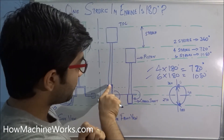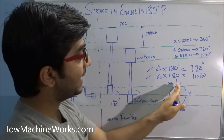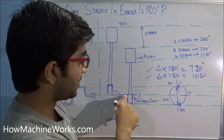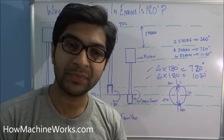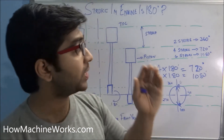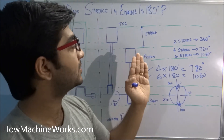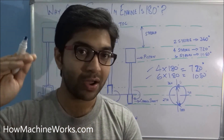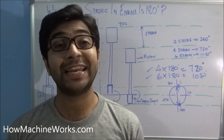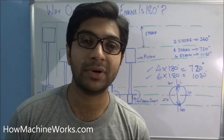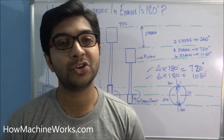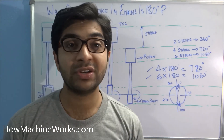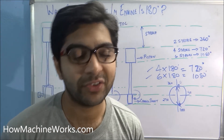That's how the stroke length happens for the piston, and how the crankshaft moves from top to bottom resulting in one stroke of 180 degrees of rotation. I believe you now understand how this 180 degrees comes about for a crankshaft rotation which makes one stroke. For more technical videos please click the subscribe button, drop a comment, or click the like button to motivate our team. Thanks for watching, have a great day!